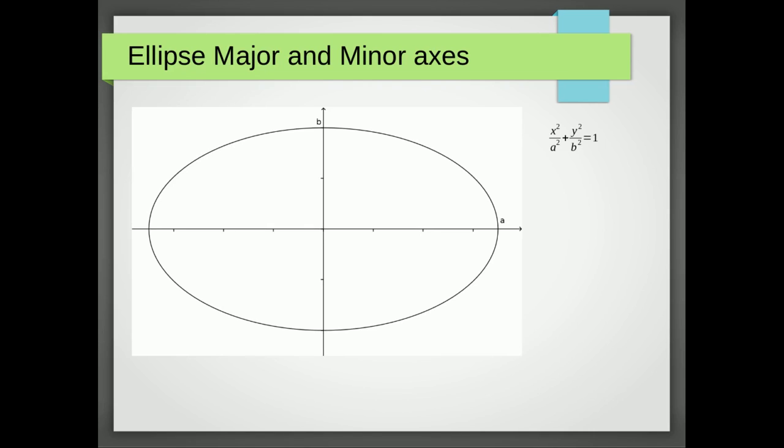In this video I'm going to show you how to find the equation of an ellipse. The equations are in the form x squared over a squared plus y squared over b squared equals 1, where a is where the ellipse cuts the x-axis and b is where the ellipse cuts the y-axis.